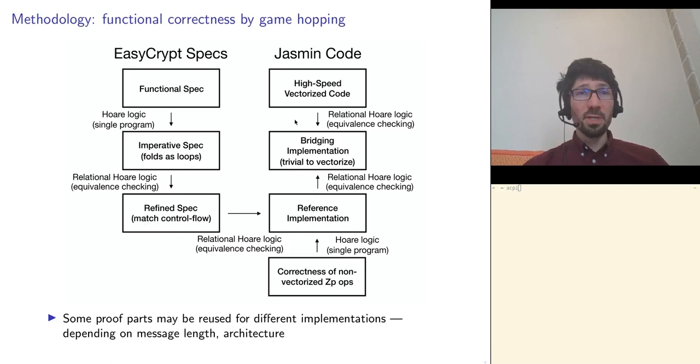So this was for the tooling, but tooling alone is not enough to verify complex pieces of software. Let me now talk about the methodology. We start from a functional specification that is a high-level mathematical description of the intended behavior of our program. On the other hand, we have highly optimized low-level implementation. In practice, we may have several of these implementations optimized for different variants of the microarchitecture, or optimized for different sizes of the message.